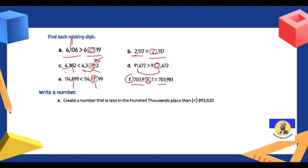Create a number that is less in the 100,000 place. Where is the 100,000 place? Ones, tens, hundreds, thousands, ten-thousands, hundred-thousands. Give a number less than this digit — if the digit is 8, write something smaller, like 7. For example: 793,820 or 693,820 or 600,000 — no problem.